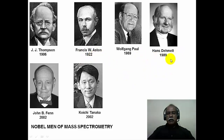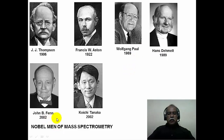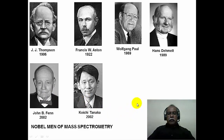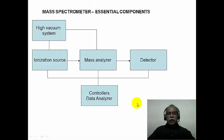Wolfgang Paul and Hans Dempster shared the Nobel Prize in 1989. Both worked on the ion trap method of mass spectrometry, known as ion cyclotron resonance mass spectrometry. Recently, in 2002, John Fenn and Koichi Tanaka shared the Nobel Prize for their discovery of electrospray ionization mass spectrometry by Fenn and MALDI mass spectrometry by Tanaka. Mass spectrometry has had its share of a number of Nobel laureates who made seminal contributions in this area.